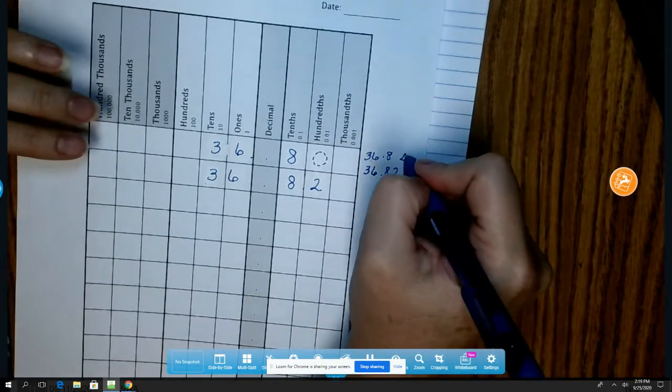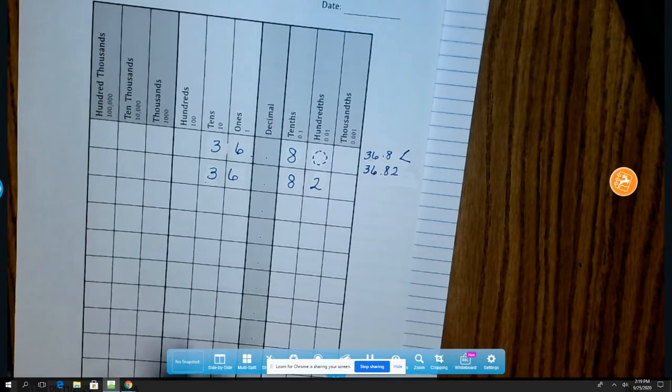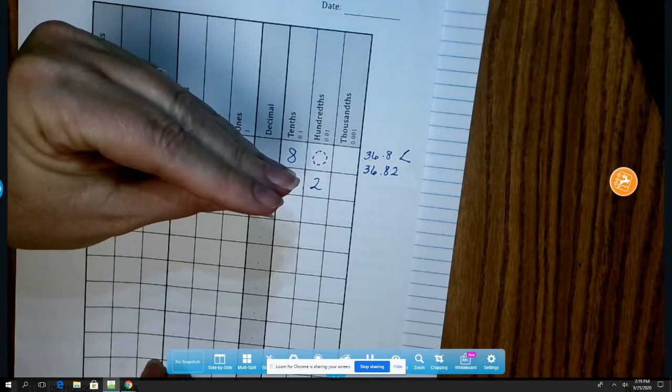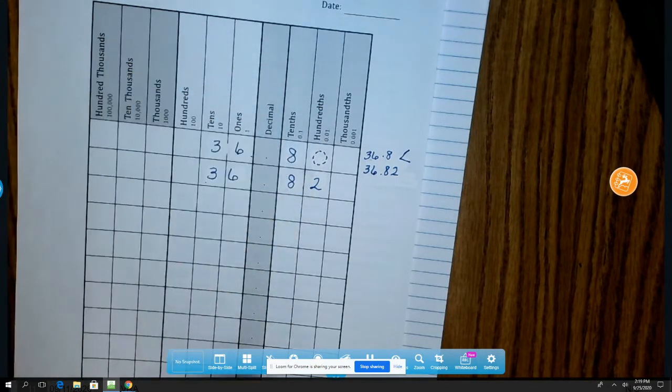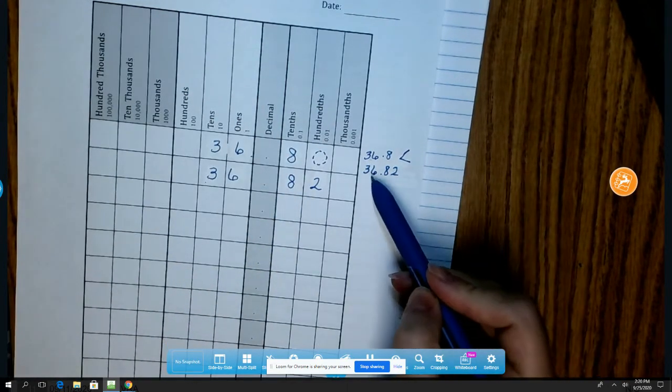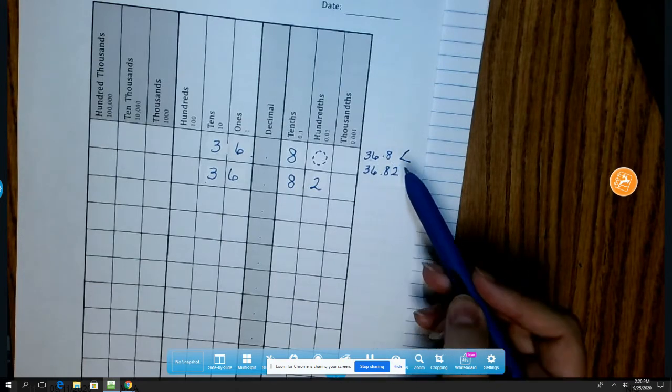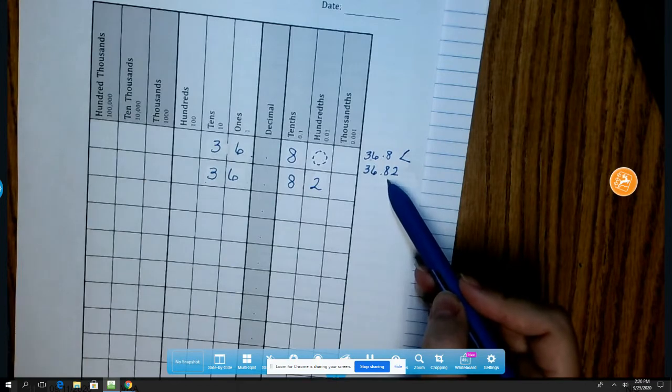Even if I don't know what the name of this symbol is, I can figure out which symbol I need to use because I can think of it as a very hungry duck or alligator. You may have heard this when you were in younger grades. That whichever number is the biggest is the one the alligator or the duck will eat. And so since 36 and 82 hundredths is larger than 36 and 8 tenths, this is the one that the duck wants to eat. And it's called less than.